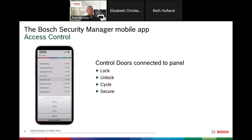Several Bosch control panels also include an access control feature — access control that's specifically part of the intrusion panel. Bosch Security Manager gives you control of that as well. From the app, you can lock, unlock, cycle, and secure a door. So if somebody forgot their key or card, you can cycle it just like they had swiped their card. If something bad has happened and you want to lock down everything, you can press the secure button so no one can use the door, even with a valid card. You have complete control right in the palm of your hand.